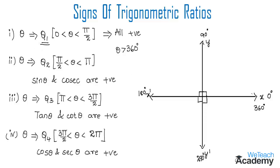The angle ranging from 0 to 90 degrees is called quadrant 1. The angle ranging from 90 to 180 degrees is called quadrant 2. The angle from 180 to 270 degrees is quadrant 3, and from 270 to 360 degrees is quadrant 4. In quadrant 1, all the ratios are positive.